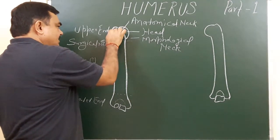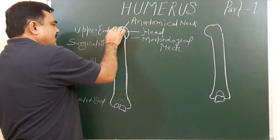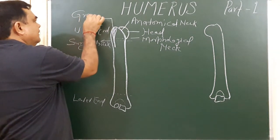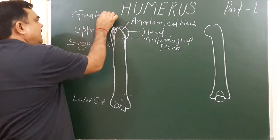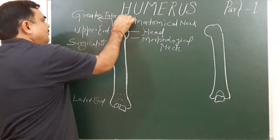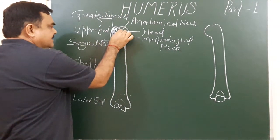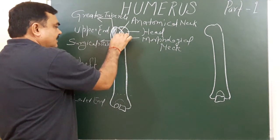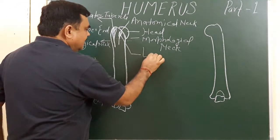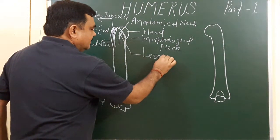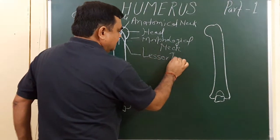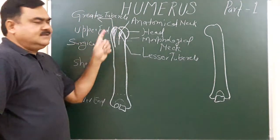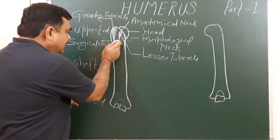Here is an elevation known as the greater tubercle. This is the greater tubercle. This is the lesser tubercle. Between these two tubercles there is a groove.